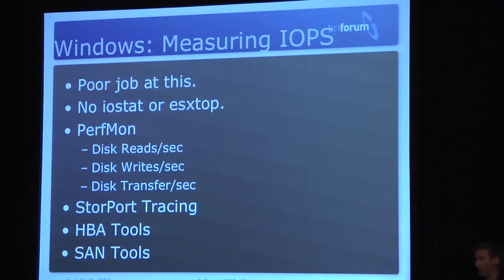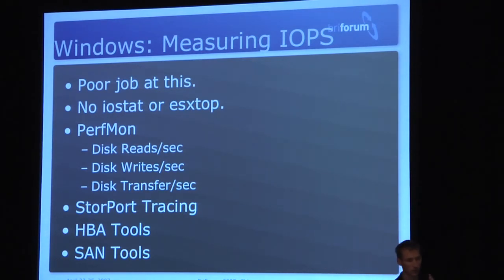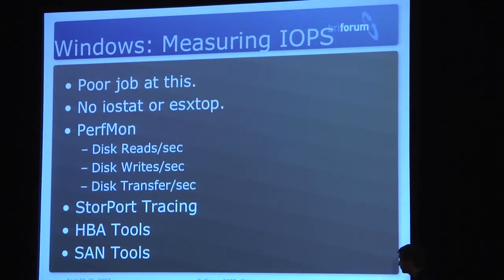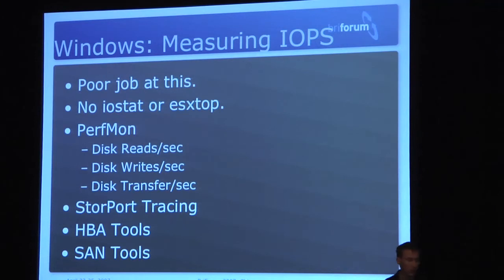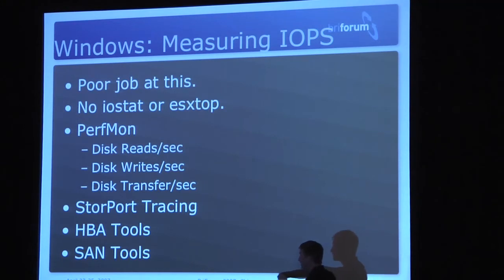Now we're going to shift into how to measure these IOPS before we talk about reducing them. Windows does a really poor job at measuring IOPs — it can tell you the counts, but does an awful job of telling you how long an IOP takes. To find out the number of IOPs you're doing, you can use performance counters in Perfmon. You can look at your C drive, D drive IOPs, and so forth. You can also do store port tracing, but the best way to measure IOPs is back end with SAN tools.